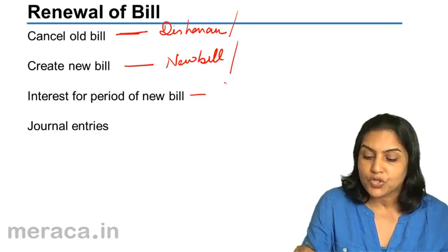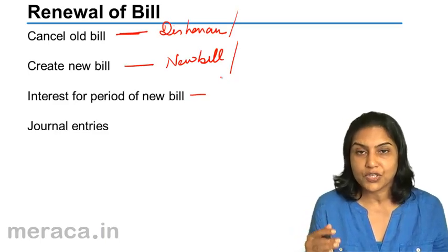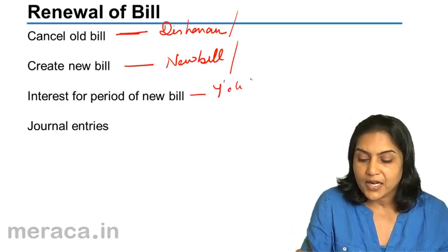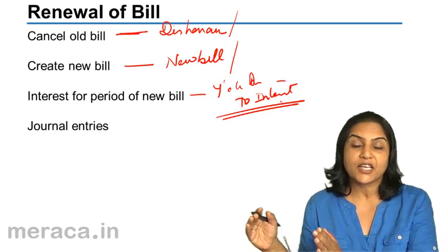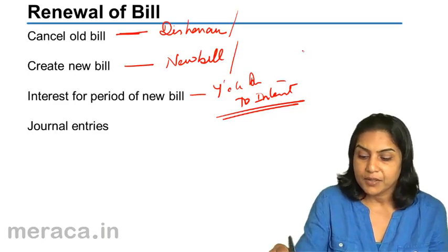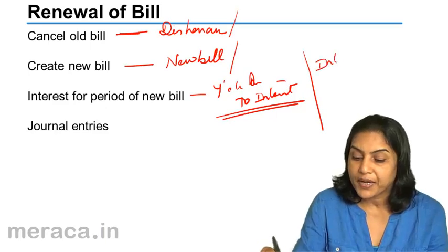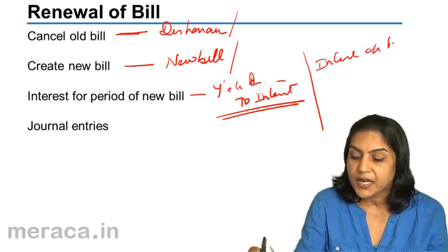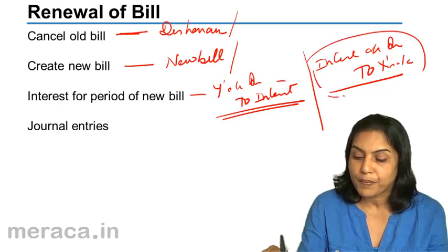In the books of the creditor — in the books of X, in our example — if interest is to be received for the new bill, we would say Y's account debit to interest. This interest is for the remaining period, the extra period, the new period which is now coming up. In the books of Y, similarly, the entry would be: interest is an expense — interest account debit to X's account. This entry needs to be also passed.